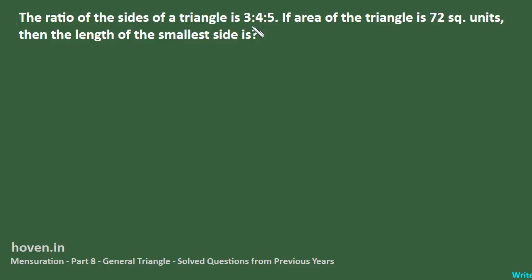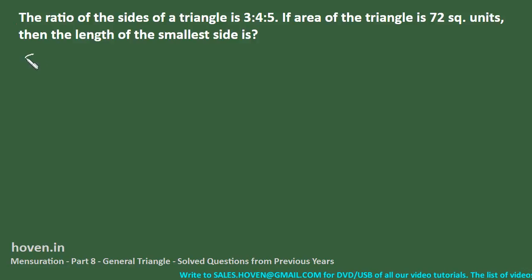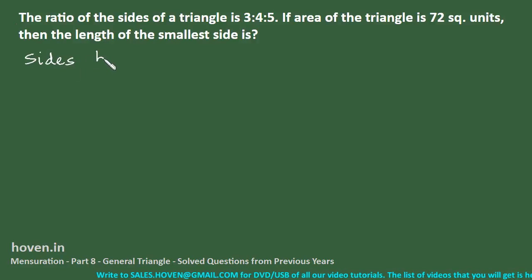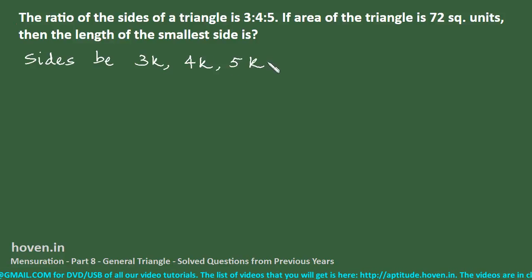Next question: The ratio of the sides of a triangle is 3:4:5. If the area of the triangle is 72, then the length of the smallest side is what? Let the sides be 3k, 4k, and 5k. These are Pythagorean triplets, so this is a right-angled triangle.